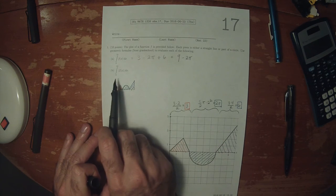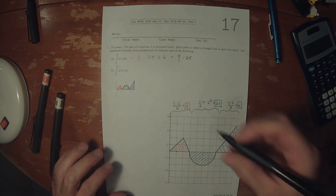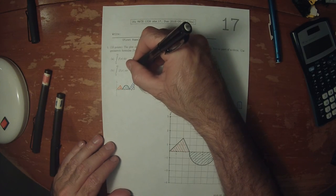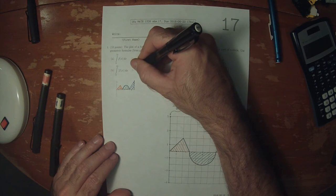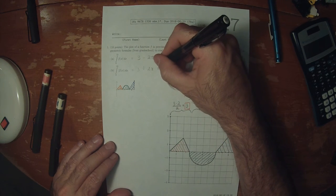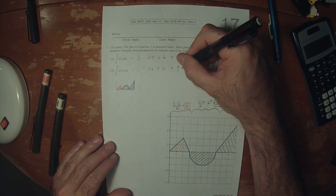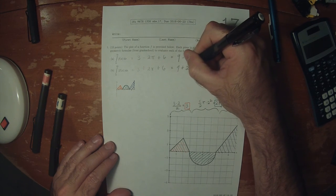So this integral will reckon all of these areas as being positive. So this would be three plus two pi plus six. So that would be nine plus two pi.